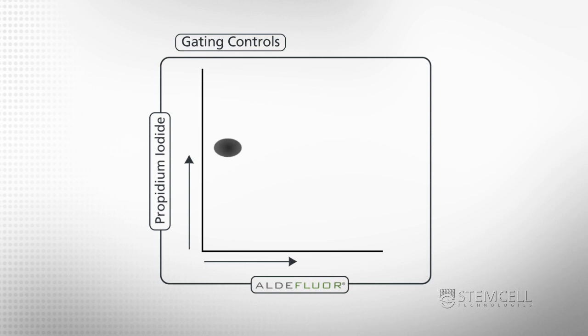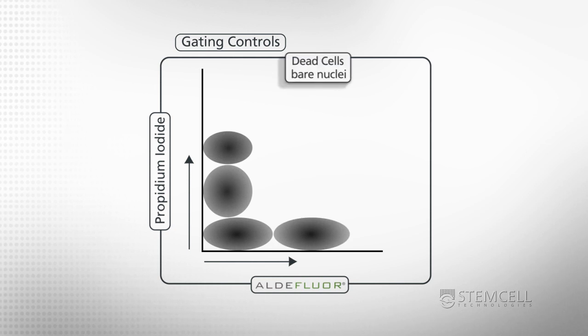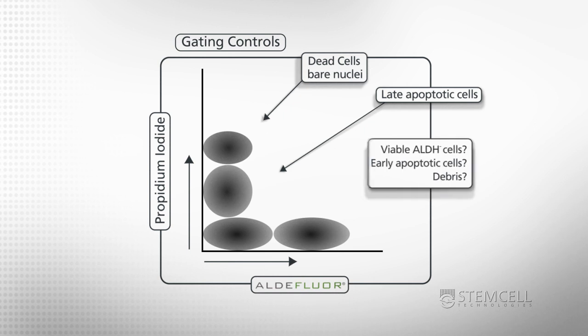Incubating a cell sample with ALDEFLOR in the presence of the ALDH inhibitor DEAB is an essential negative control in all ALDEFLOR experiments, and it is necessary to distinguish cells with high ALDH activity from cells that display background fluorescence only. It is also important to identify and gate out dead and late apoptotic cells by staining the ALDEFLOR-reacted cell sample with a viability dye such as propidium iodide. Dead and apoptotic cells do not retain the fluorescence signal and may show up as ALDH-low or ALDH-negative in flow cytometry diagrams.